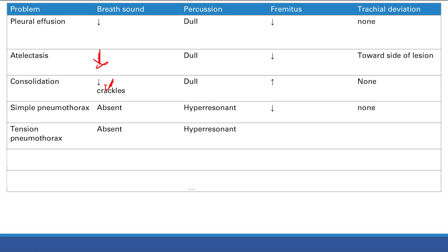Tension pneumothorax: same as simple pneumothorax — decreased breath sounds, hyper-resonant, decreased fremitus — but now you also get tracheal deviation away from the lesion due to the buildup of pressure.